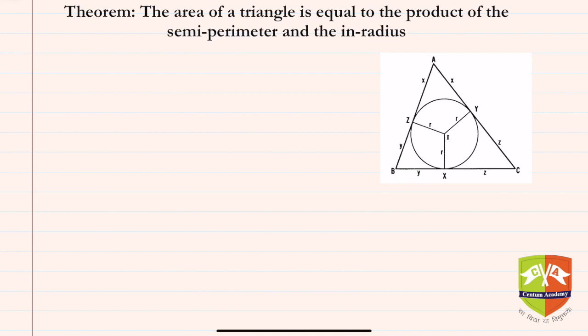Semi-perimeter is nothing but half of the perimeter of the triangle. In the given triangle, if you see this side is a, this side is b, and this side is c, then semi-perimeter is given by the symbol s. This was popularized by the famous mathematician Euler, who said s is equal to a plus b plus c by 2.